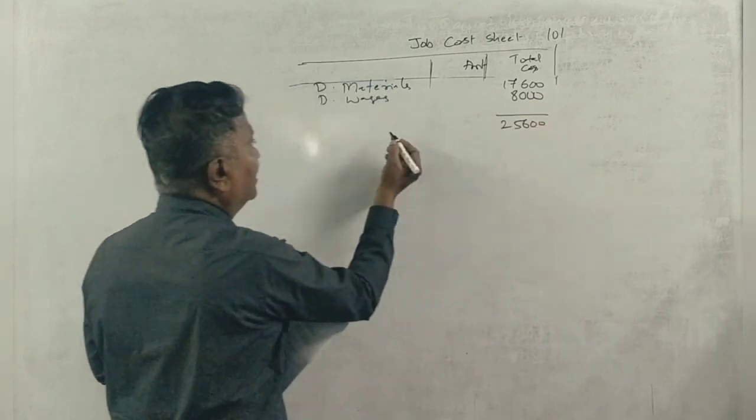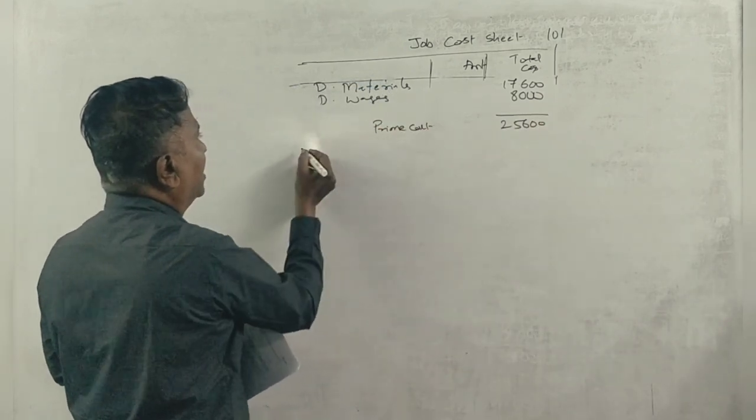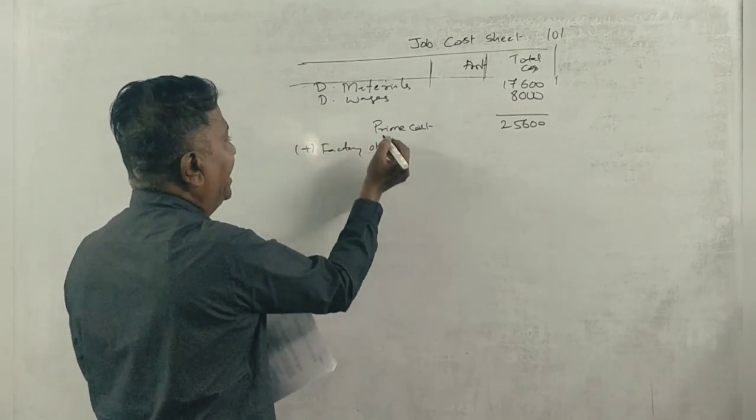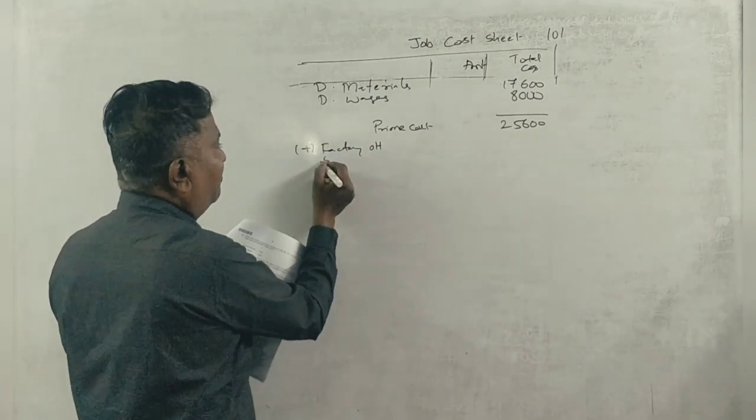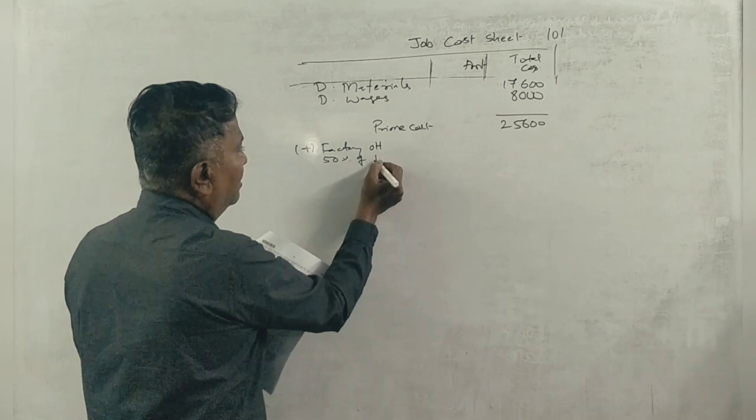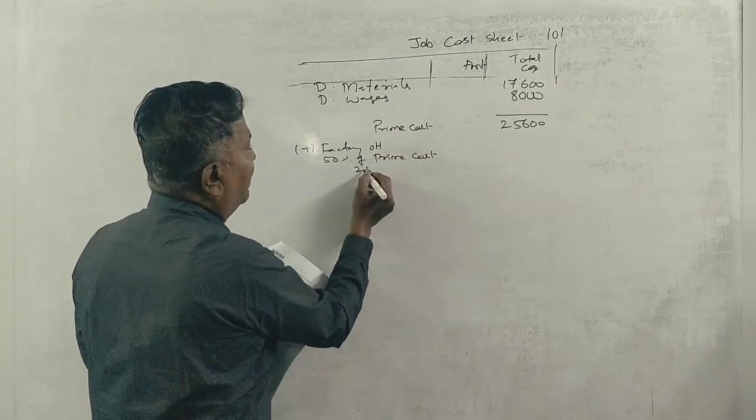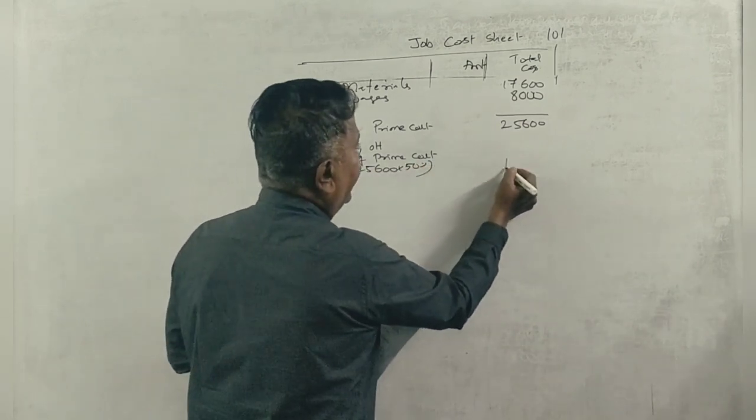25,600 is the prime cost. Now we work on factory overheads. Factory overheads are 50% of prime cost, so 25,600 into 50% equals 12,800.